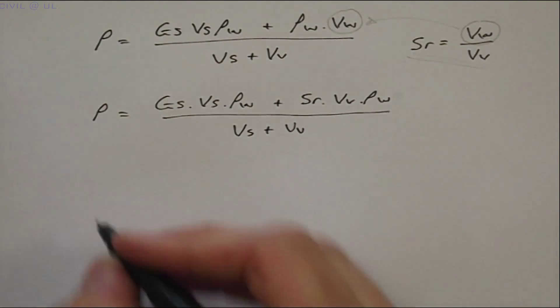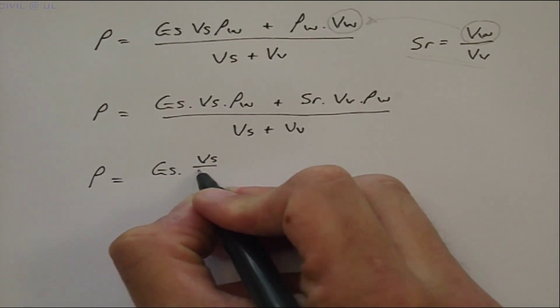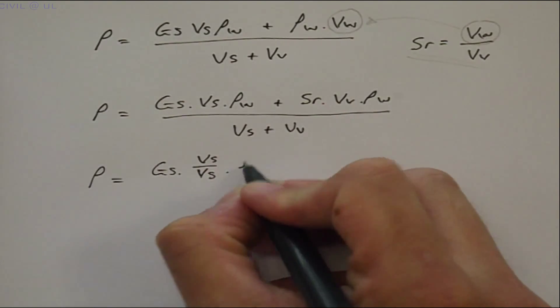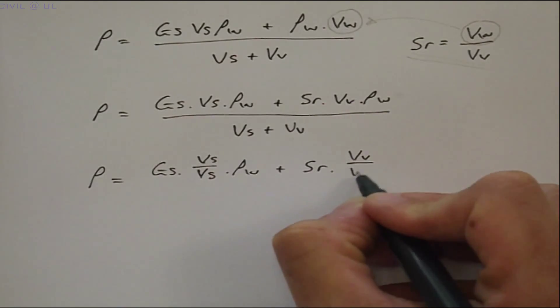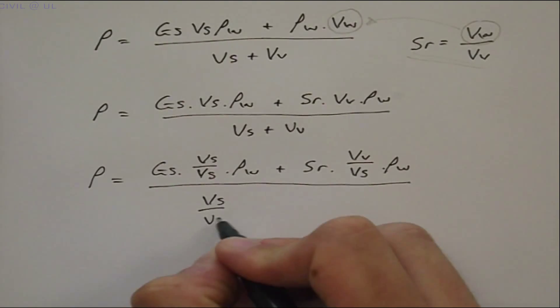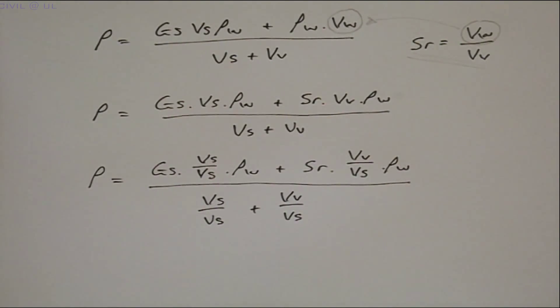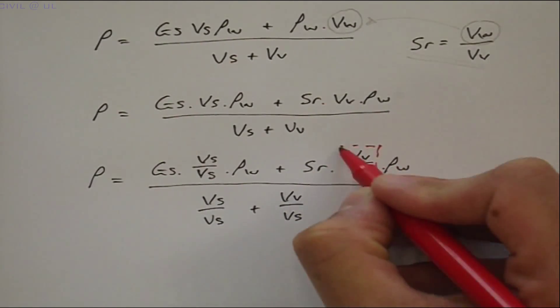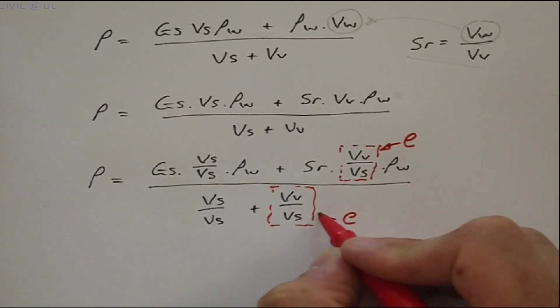We get the density is equal to GS times VS divided by VS times ρW, plus SR times VV divided by VS times ρW, all divided by VS over VS plus VV over VS. And note that VV over VS is equal to E or voids ratio.